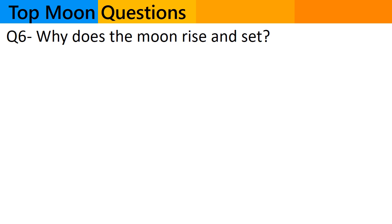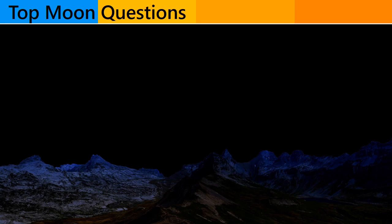Question number 6. Why does the moon rise and set? The moon rises and sets in a manner similar to the sun and other celestial bodies. The rising and setting of the moon are a result of its orbit around the earth and the rotation of the earth on its axis.